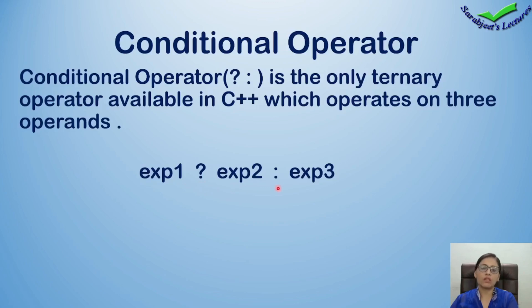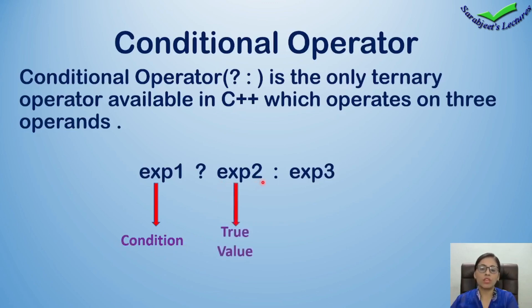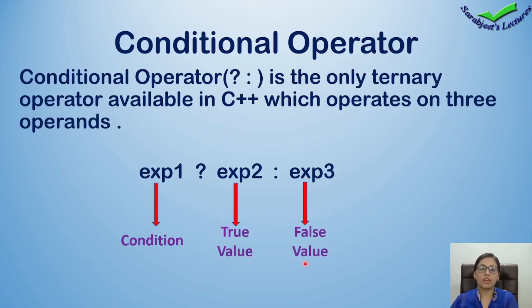Expression one is a condition. Condition jo hai, woh true ho jayegi toh jo bhi true value hogi, hum expression two pe likhenge. True value ko hum hamesha expression two pe likhte hai. Aur jab hi expression one mein likhi hui condition false ho jayegi, toh us value ko hum expression three mein likhenge. So, expression one mein kya likhna hai — condition. Expression two mein kya likhna hai — true value. Condition ke true hone pe jo true value execute hogi, woh expression two mein likhi jayegi. Expression three pe false value likhni hai. Jab condition false ho jayegi, toh yeh false value execute hogi.